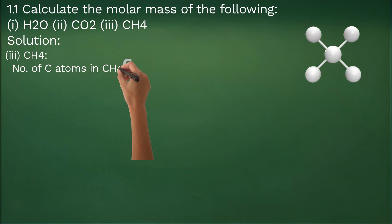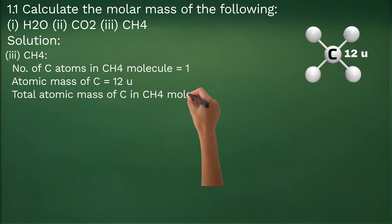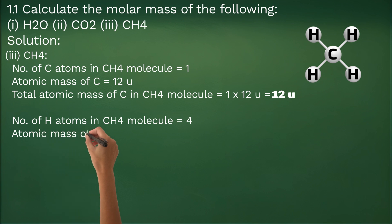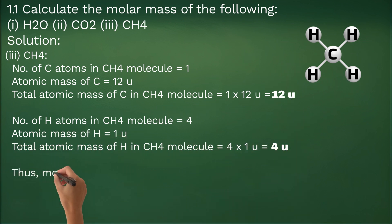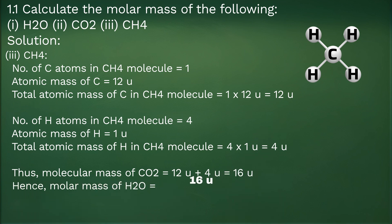In case of CH4, there is one carbon atom which has an atomic mass of 12U, while the four hydrogen atoms have combined mass of 1U multiplied by 4, that is 4U. Adding the two masses, we get a molecular mass of 12U plus 4U, equal to 16U in CH4. Thus, molar mass of CH4 becomes 16 grams.